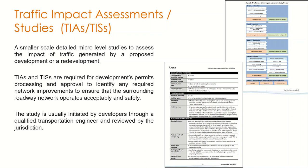A snapshot of parameters or constraints applied to the traffic impact study process is shown, such as the maximum cycle length that can be implemented while looking at improvements, and other parameters such as peak hour factors, minimum phase settings, and so on.